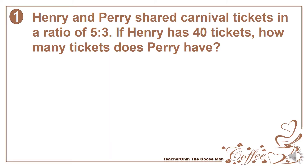Henry and Perry share carnival tickets in a ratio of 5 to 3. If Henry has 40 tickets, how many tickets does Perry have? We want to find out the number of tickets for Perry since Henry already has 40 tickets.